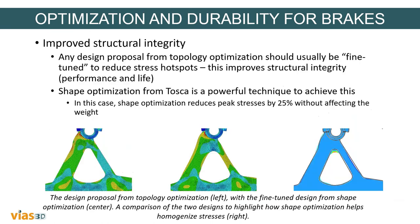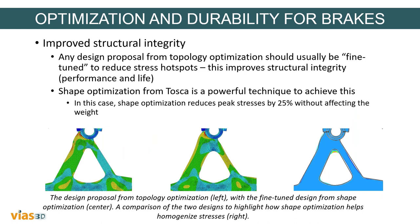We then move to improving structural integrity by reducing hotspots — locations of highly concentrated stresses — with the goal of improving performance and life of the disc. This is done with the shape optimization module in Tosca Structure. The results show a 25% reduction of peak stresses with no significant change in weight or stiffness, since only minimal changes to the shape of the part are performed. We can also see the evolution of iterations throughout the optimization runs in Tosca.